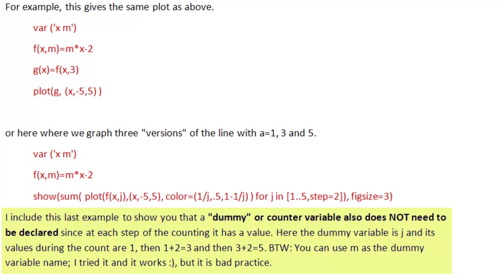I want to point out something very important. J is a dummy or counter variable. It's neither a variable name nor an object name. It's a dummy variable. And it does not need to be declared. So this J did not need to be declared because at each step of the counting, it has a value. Here the dummy variable is J and its values during the count are 1. That's the first one right here, 1. And then we add step 2. That makes 3. And then again step 2. That makes 5. So the dummy variable does not have to be declared. And by the way, you can use m as the dummy variable. I tried it and it works, but that's kind of bad practice. I always use J and K.